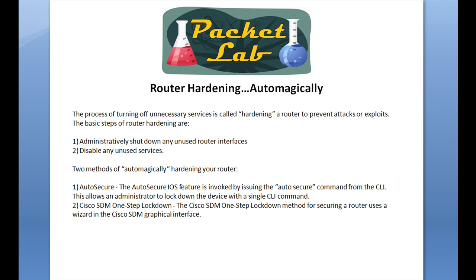Luckily, on Cisco routers that is the default setting — if you get a Cisco router out of the box, the interfaces are shut down by default. The second of these basic steps is to disable any unused services, and that's what Auto Secure was created to accomplish. The problem is that you have to know what you're using and what you're not using for this to be effective. By default, Cisco routers come with some services enabled, and to disable something you have to know it was enabled in the first place and know the command to disable it. That's where Auto Secure comes in handy — with a single command you can go ahead and disable these services.